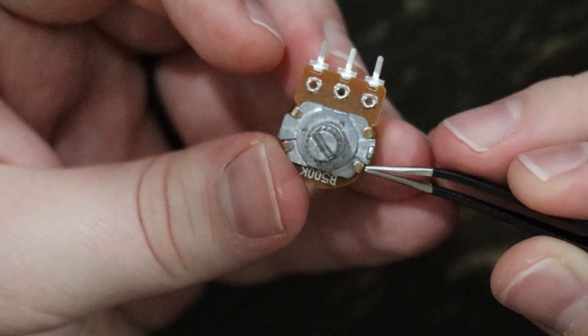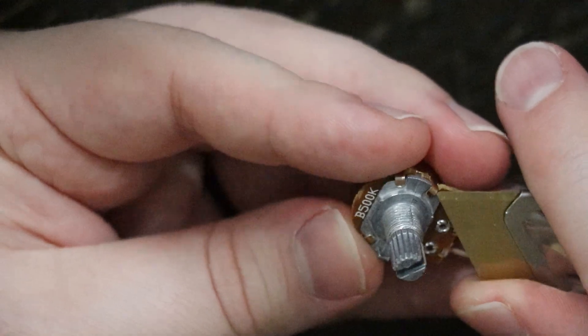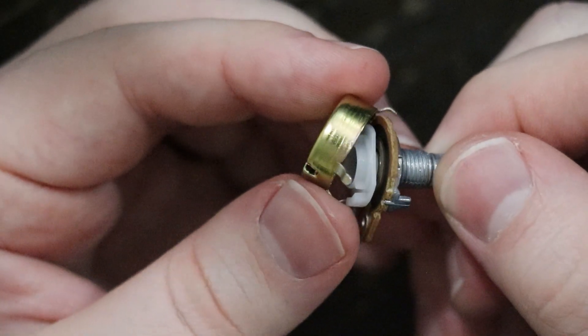To do this, all you need to do is undo these four little metal latches. They're really easy, but you just need something thin enough to jam under there and lift it up. Separate the potentiometer from its housing.